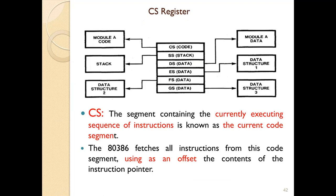The 80386 fetches all instructions from the code segment using an offset — the content of the instruction pointer. Whatever instructions are currently being executed are placed in the code segment, and the 386 fetches these instructions from the code segment. While fetching an instruction, it uses an offset, which is the content of the instruction pointer.